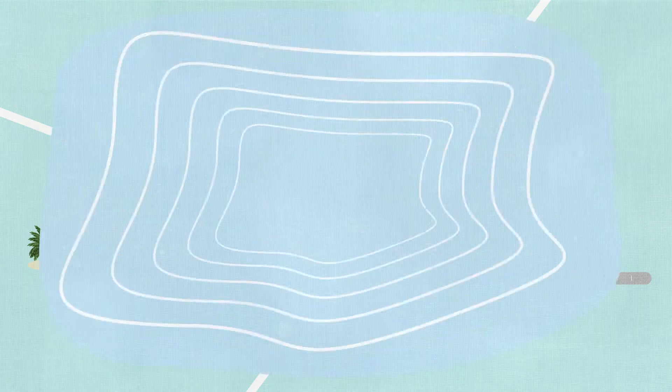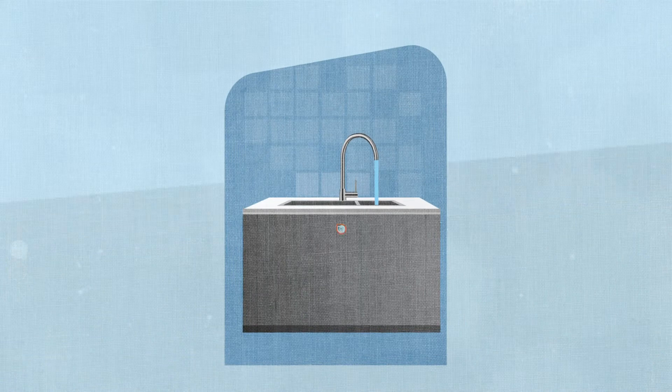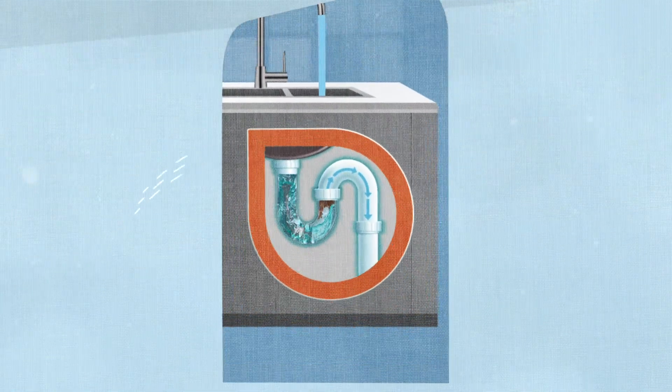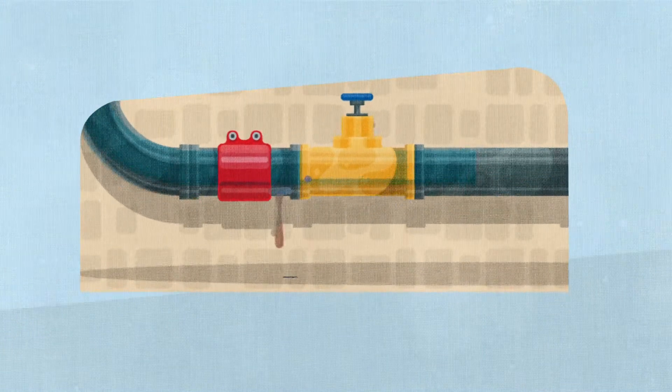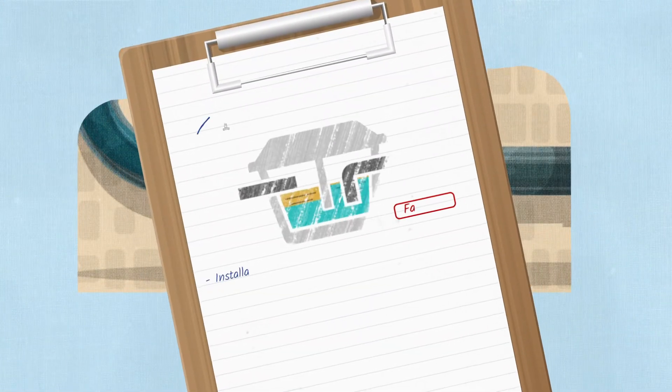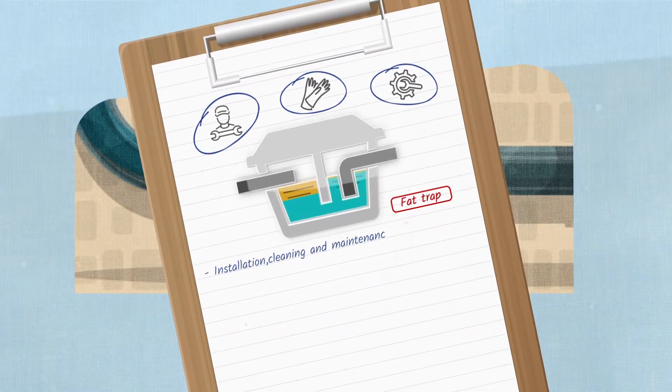This includes avoiding any blockage of internal extension pipes and preventing damages that may occur to the sewerage network through proper installation, cleaning, and maintenance of grease traps.